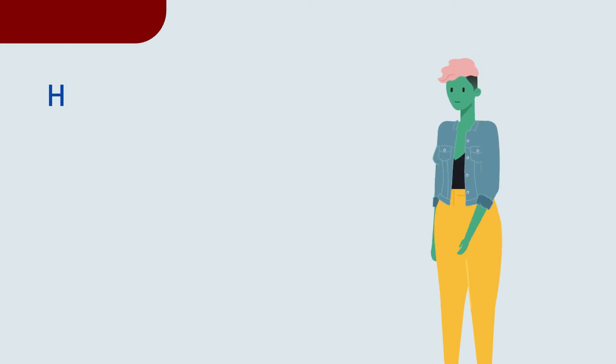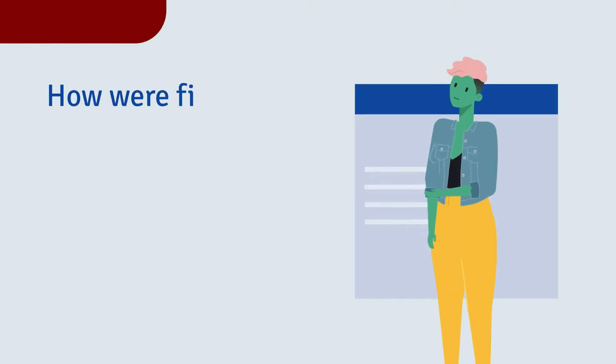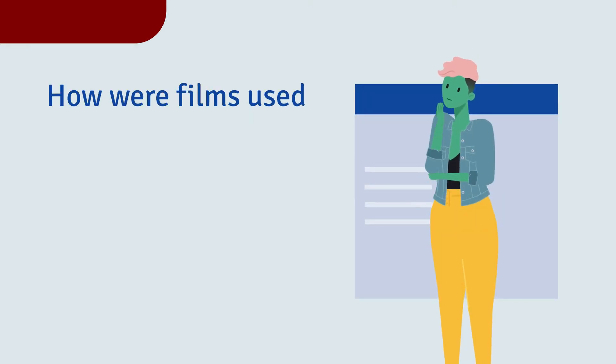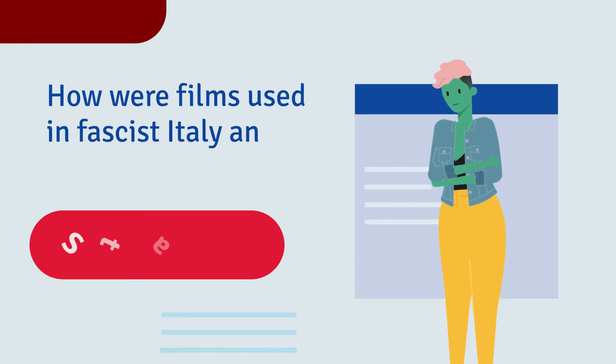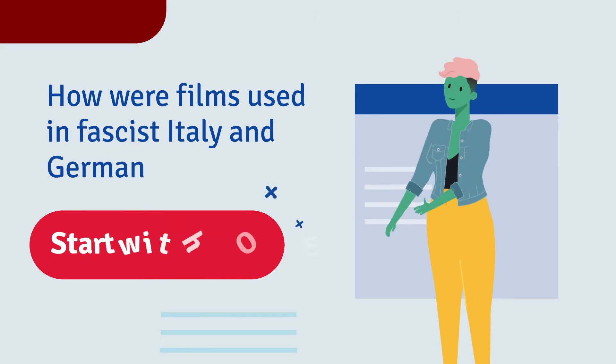Say you have an assignment on the use of films in Fascist Italy and Germany. How can you use Omni to help you?